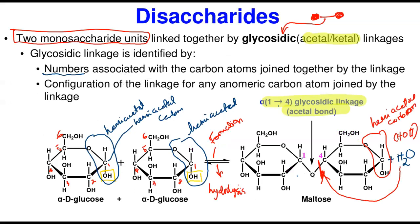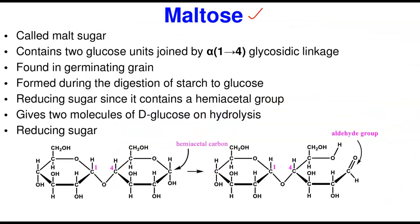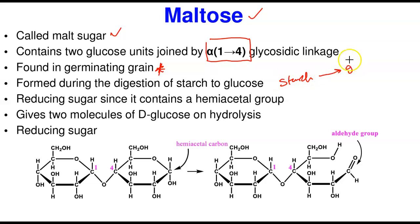Now let's go to the individual disaccharides. The reaction I showed you is the formation of maltose. Maltose is otherwise called malt sugar — it contains two glucose units joined by an alpha-1,4 glycosidic linkage. It is commonly found in germinating grains and also formed during the digestion of starch, particularly in the mouth, where the salivary amylase breaks down cooked starch.